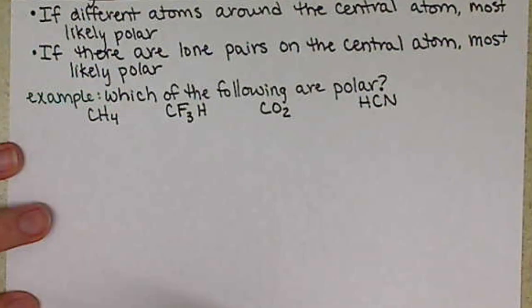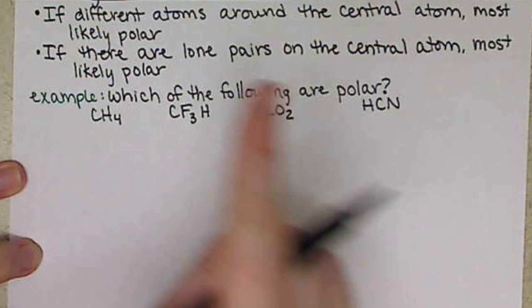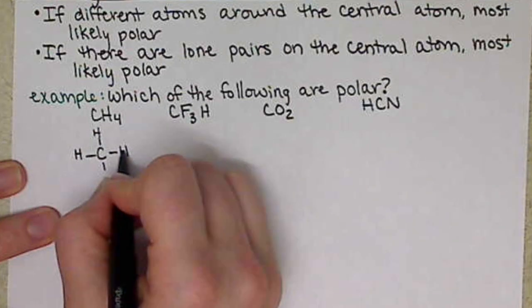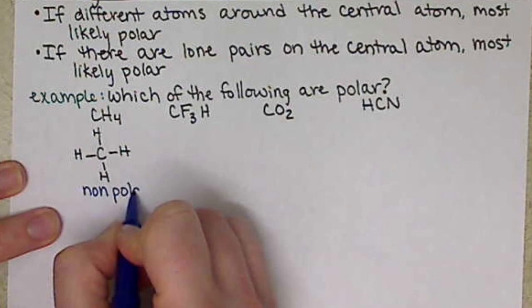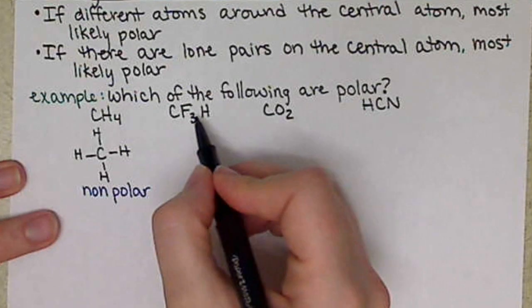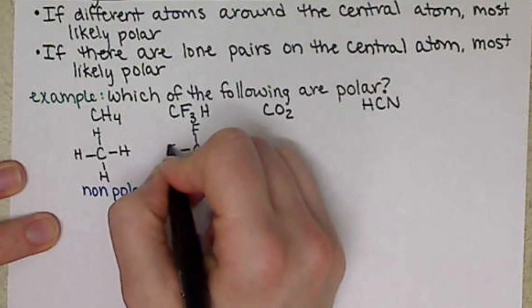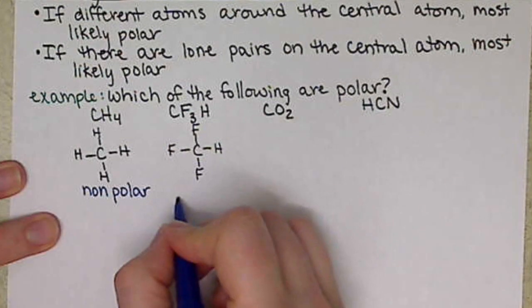You can pause the video if you want to give it a try. What you want to do is draw out your Lewis structures and then make a guess of what's going on around the atom. Is it going to win a tug-of-war on one side? Are there different atoms around there? Or is it being pulled equally? So CH4 was actually the example above. We have the four hydrogens around that carbon, so they're going to pull all equally, so this is going to be nonpolar. If we change out three of those hydrogens and make them fluorines, we're going to look like something like this. Now we have different atoms around that carbon, so this is going to be polar.